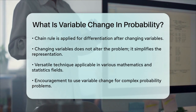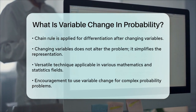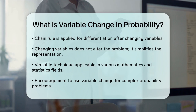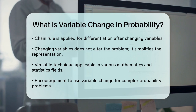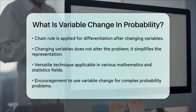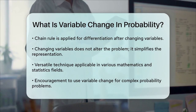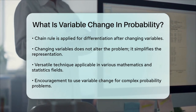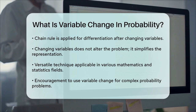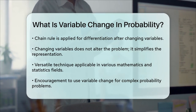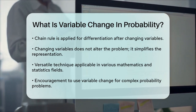The key idea here is that by changing the variables, you're not altering the underlying problem — you're just representing it in a way that makes the calculations more straightforward. This technique is versatile and applies to various areas of mathematics and statistics, making it an essential tool for anyone working with probabilities and statistical analyses. So the next time you're faced with a complex probability problem, remember that changing the variables can be a game-changer, making your calculations simpler and more manageable.